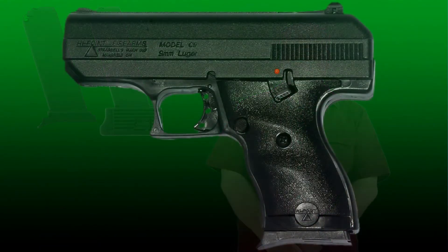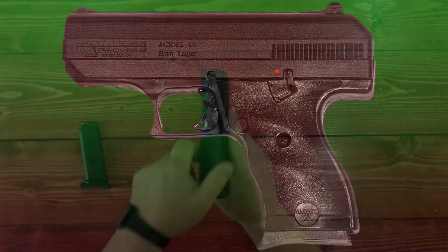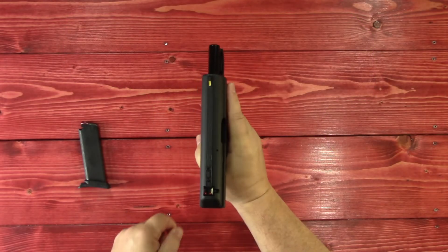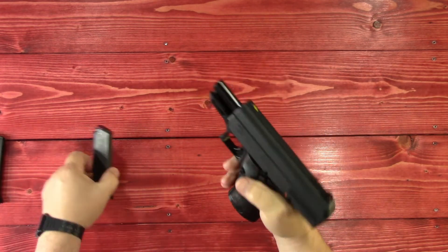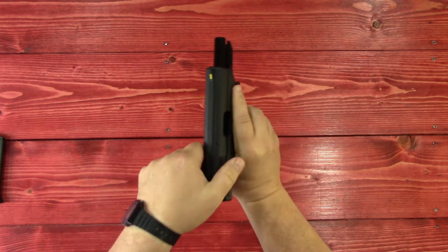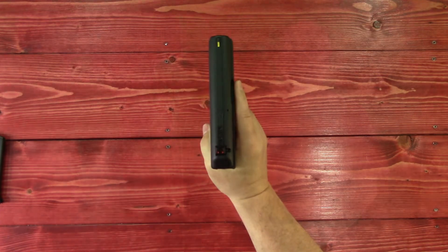All controls, including the magazine release, slide lock and safety, are on the left side only. While the slide will lock back after the last round is fired, there is no manual release lever requiring you to pull the slide back and release, via the slingshot method, after you insert a fresh magazine. Now the not-so-good things.